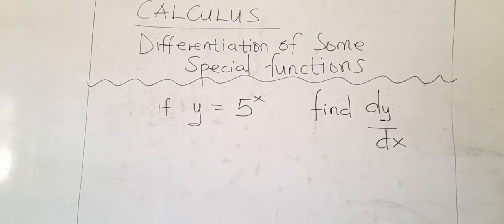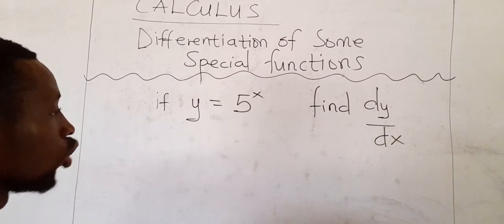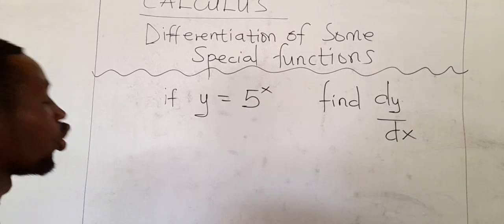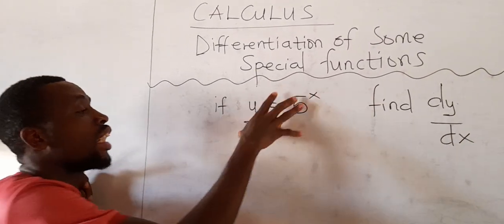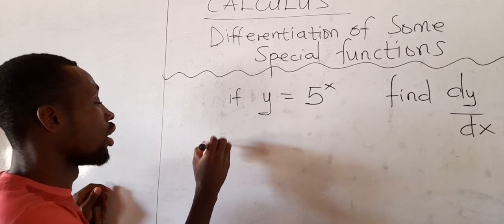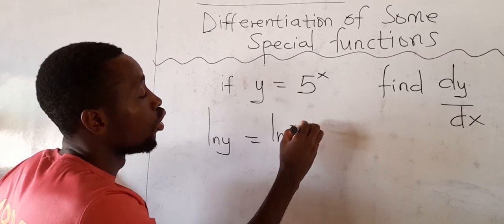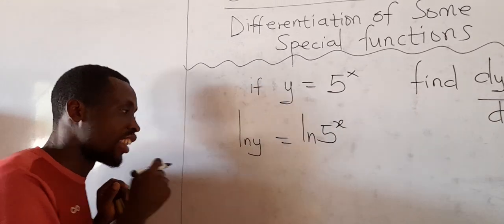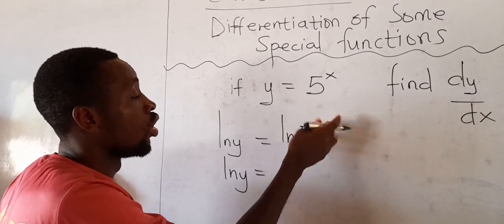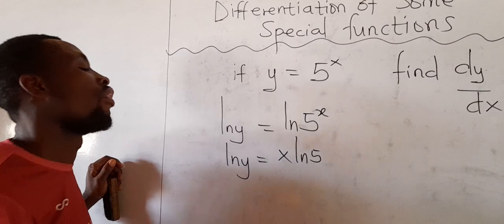There is one question on the board. If y is equal to 5 exponent x, find dy/dx. This is not the case of throwing the exponent down and subtracting — no. What we do is take the natural log of both sides of the equation. So ln y will be equal to ln of 5^x. Then, remember the rule: we can drop the exponent down to get x ln 5.